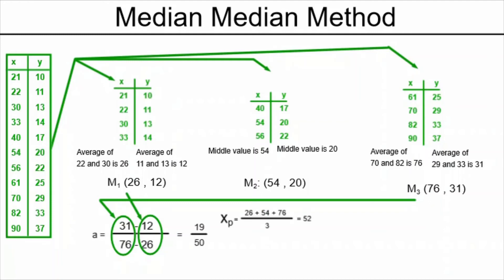We find the average of the x values in points m1, m2, and m3. And the average of those, the mean of those, is the x coordinate of our point P. We do the same thing with the y coordinates to find the y coordinate of point P. This results this time in a point P of 52, 21.